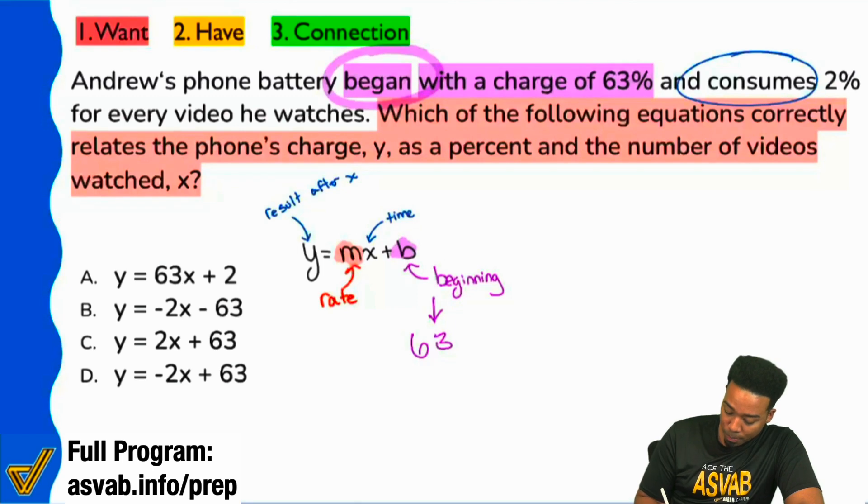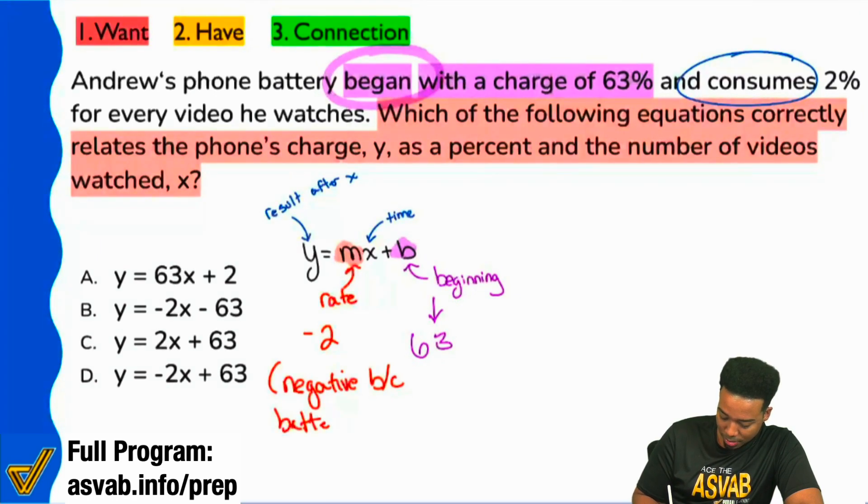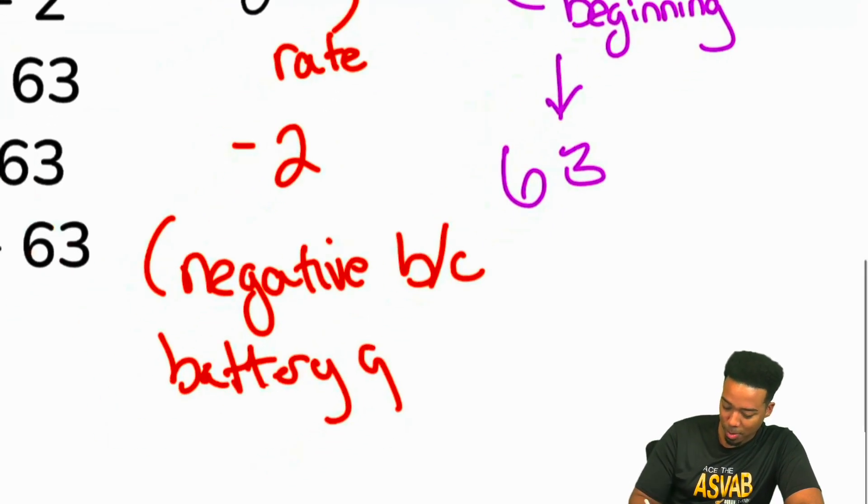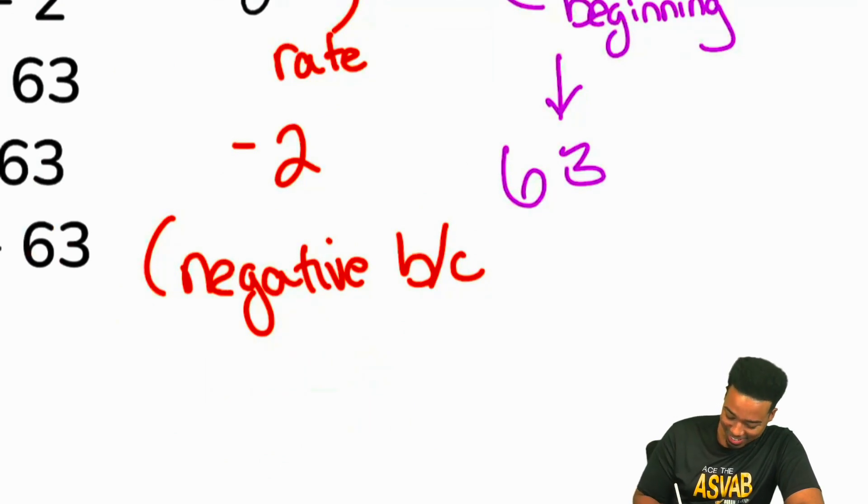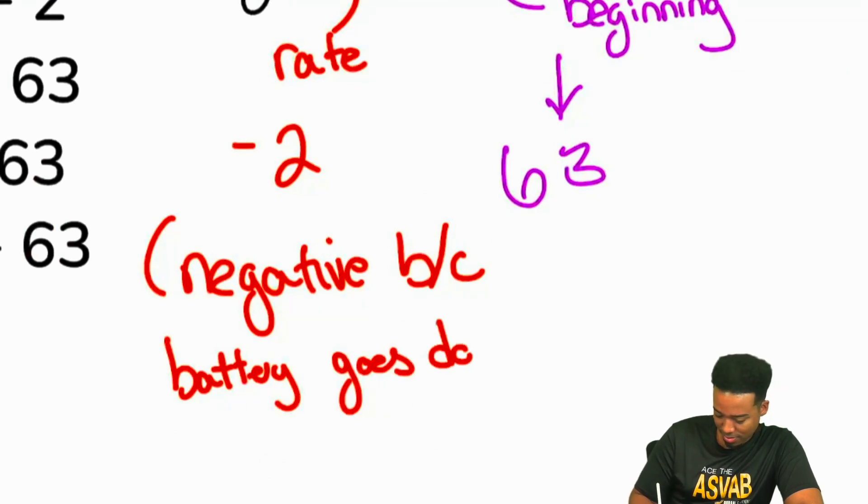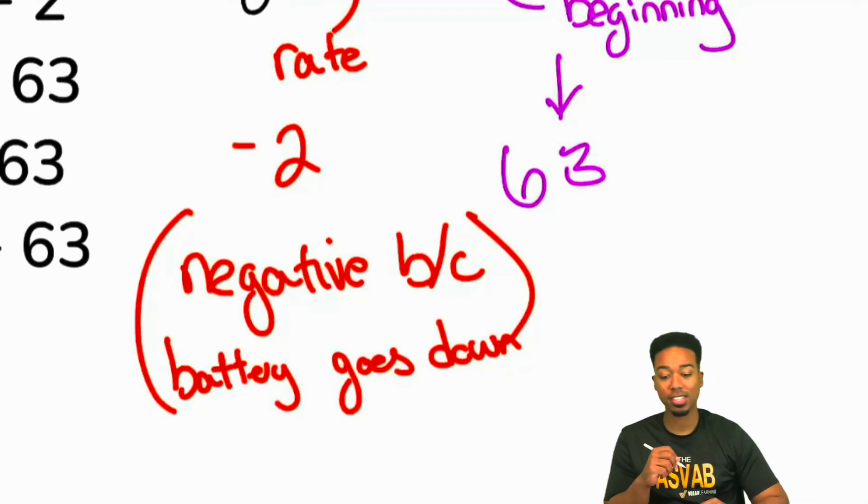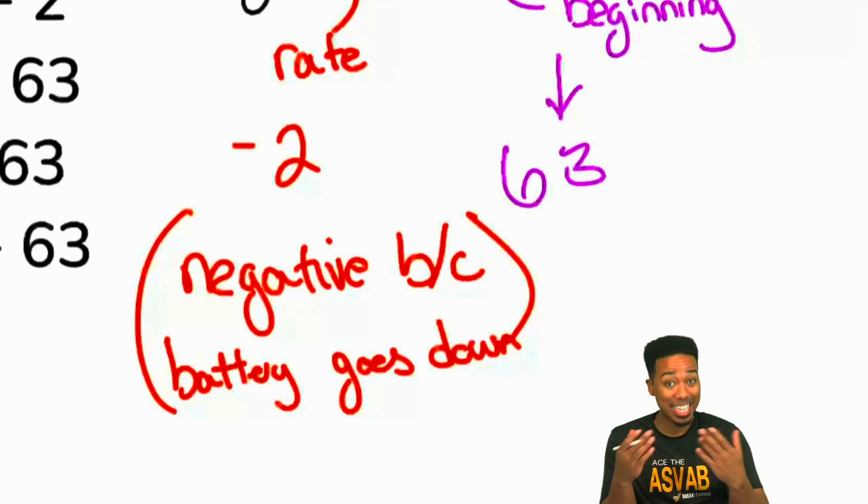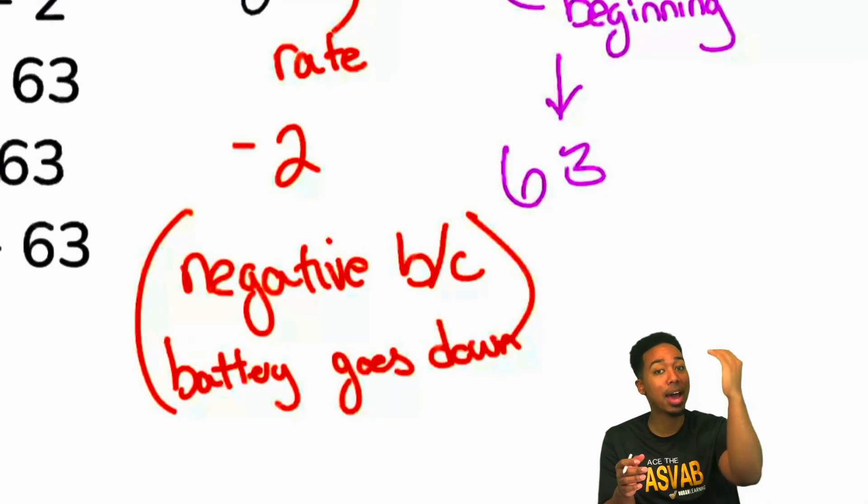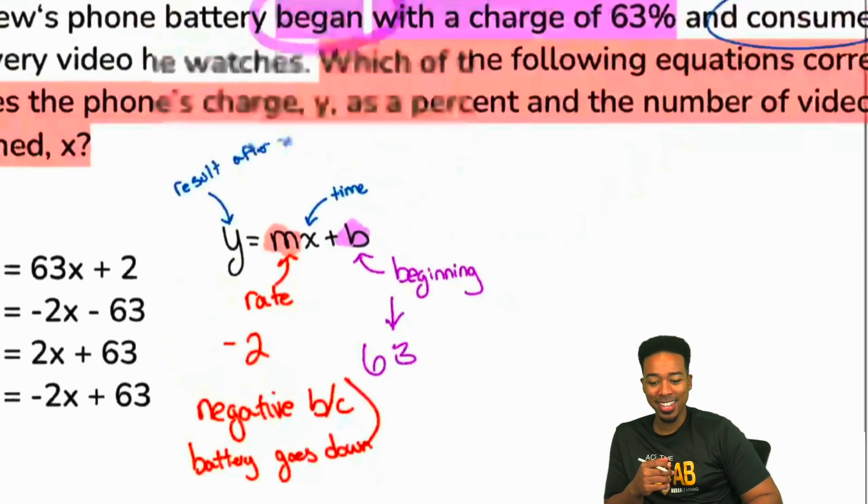And so, with that said, your rate is going to be 2, but it'll be a negative 2. Again, negative because battery goes down. It's so small. Let me just zoom in here. Sorry about that, guys. Because the battery goes down. My part of me before I continue, does that make sense to you? We are marking that 2%, that negative 2. We're marking it as negative because the battery is going down by 2% for every video. Sweet.